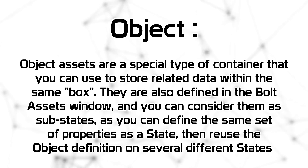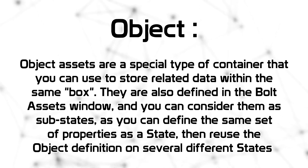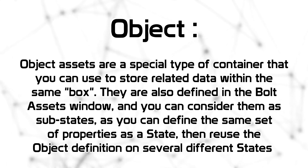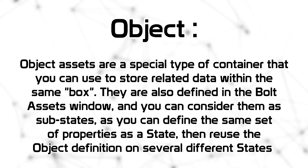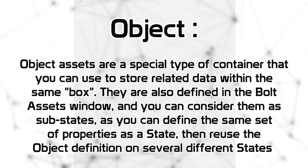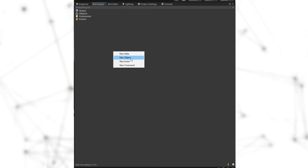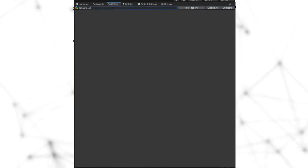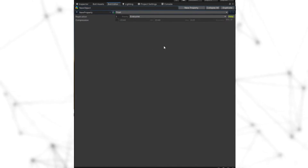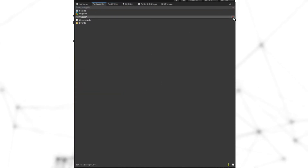Now let's cover object type variables. An object represents an object asset type. Object assets are a special container to store related data within the same box. They are defined in the bold asset window and can be considered as sub-states, since you can define the same set of properties and reuse the object definition across several different states. To create a new object, right-click on the bold asset space and select 'new object'.